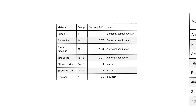Insulators generally have a larger band gap than semiconductors — so large in fact that at room temperature, or even at operating temperatures for electronics, there are no charges in semiconductors and thus their conductivity is null.